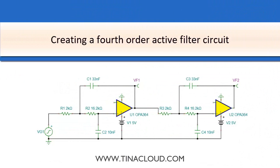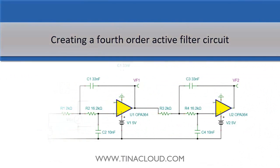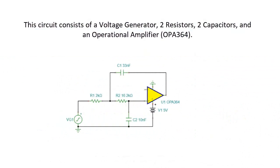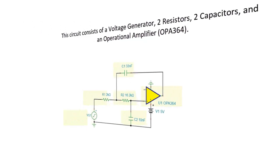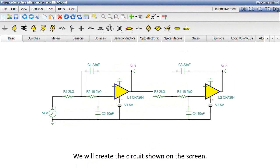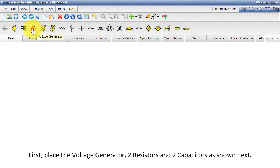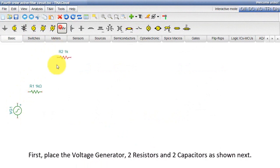Creating a fourth order active filter circuit. This circuit consists of a voltage generator, two resistors, two capacitors, and an operational amplifier, OPA364. We will create the circuit shown on the screen. First, place the voltage generator, two resistors, and two capacitors as shown.